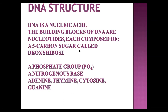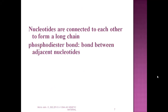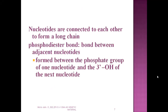There is a phosphate group and a nitrogenous base. There are four different types of nitrogenous bases: adenine, thymine, cytosine, and guanine. Nucleotides are connected to each other to form a long chain.